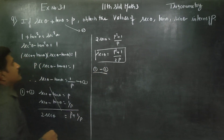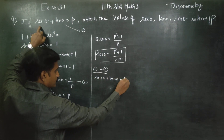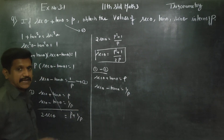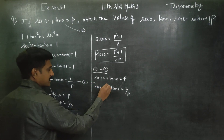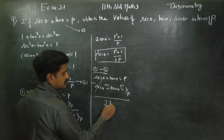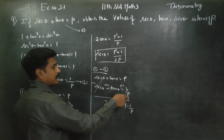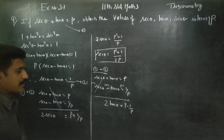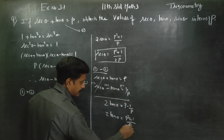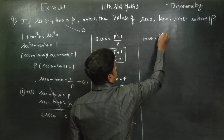Now equation 1 minus equation 2: first equation is secant theta plus tan theta equals P, second equation is secant theta minus tan theta equals 1 by P. Subtracting: secant theta cancels, tan theta plus tan theta gives 2 tan theta. On the right side, P minus 1 by P. Cross multiplying: 2 tan theta is equal to P squared minus 1 by P. So tan theta is equal to P squared minus 1 by 2P.